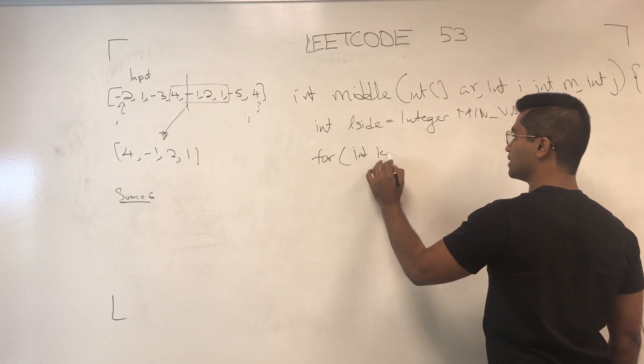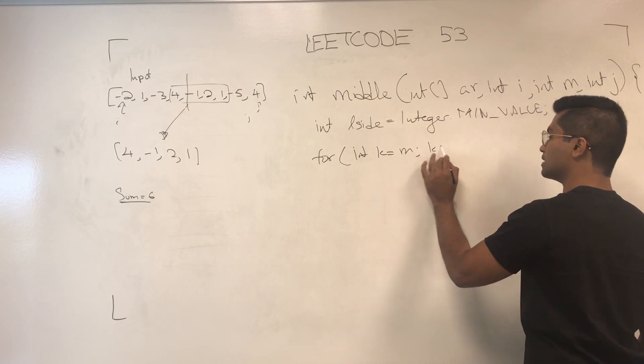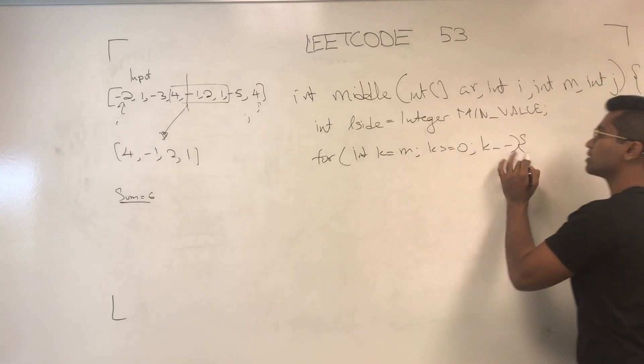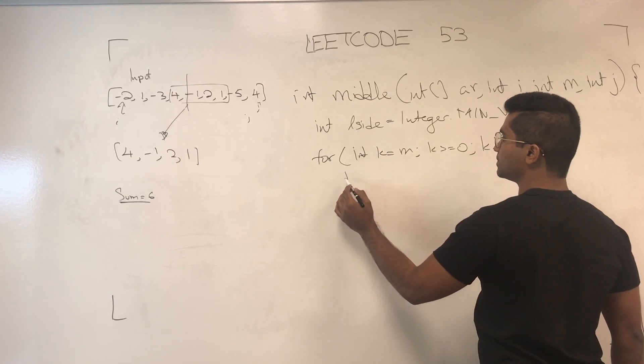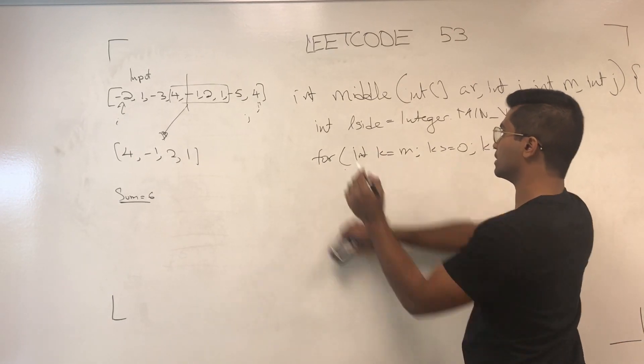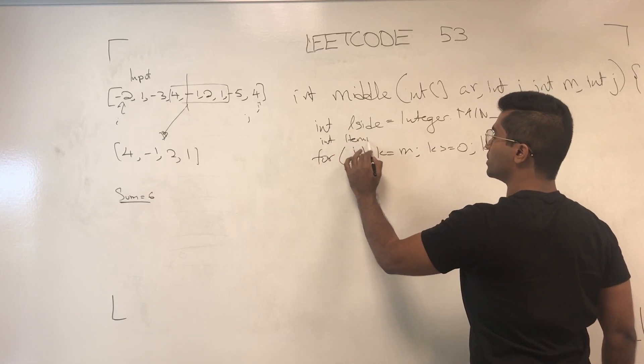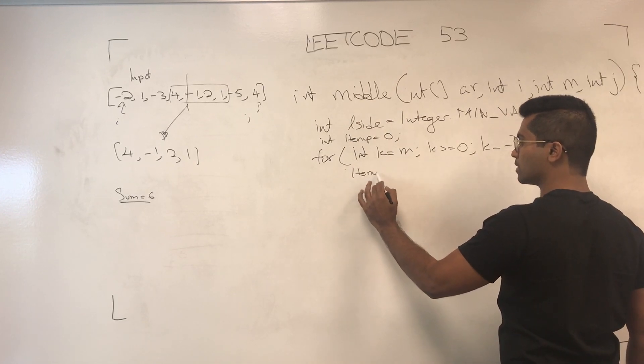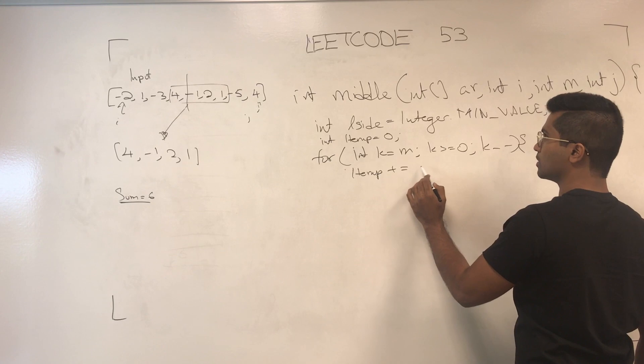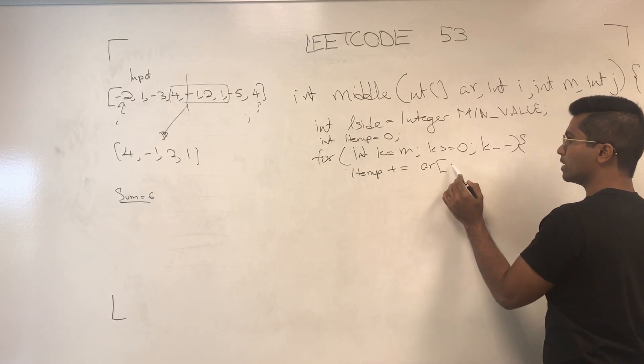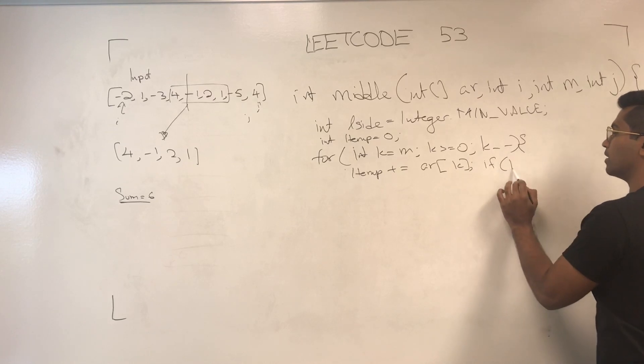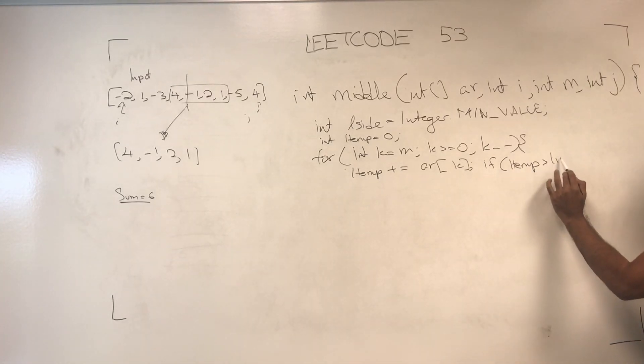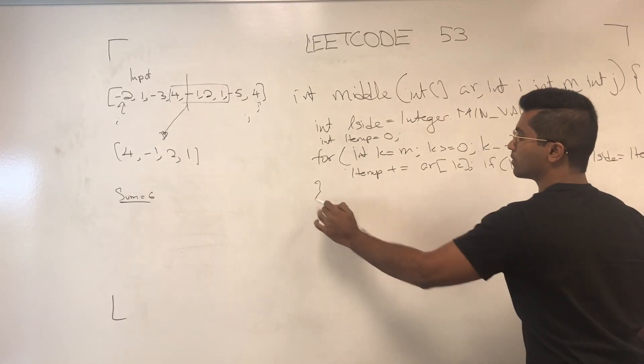So, we're going to be doing for int k equals m, k is greater than or equal to 0, k minus minus. We need a temporary L temp, which is going to be incrementing our numbers. So, L temp plus equals ar of k, and if L temp is greater than L side, then L side is set to L temp. So, let's see what it looks like for that.